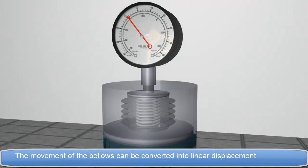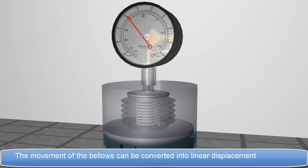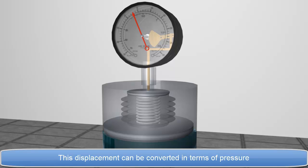The movement of the Bellows can be converted into linear displacement. This displacement can be converted in terms of pressure.